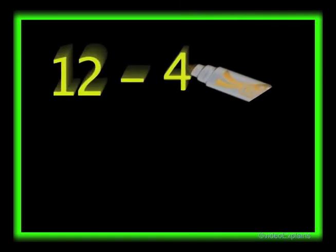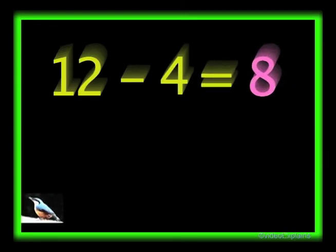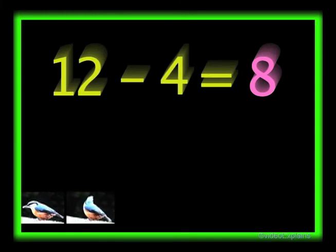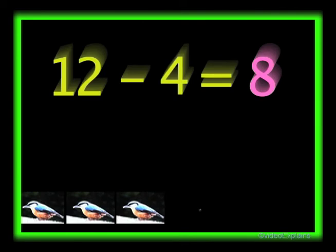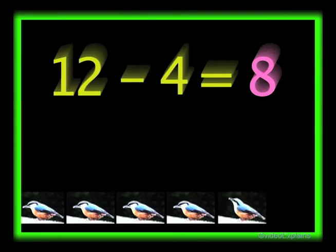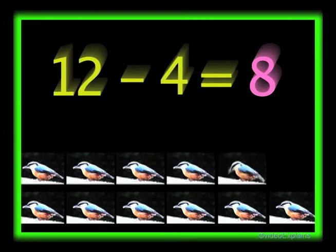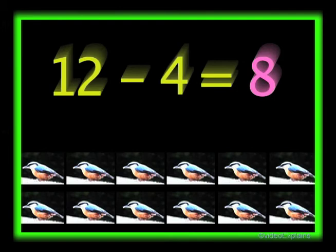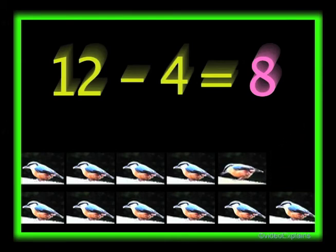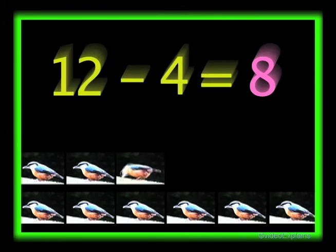Twelve minus four equals eight. There are twelve birds: one, two, three, four, five, six, seven, eight, nine, ten, eleven, twelve. Out of the twelve birds, if four of the birds fly away, then only eight birds will be left. One, two, three, four. So twelve minus four equals eight.